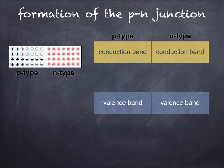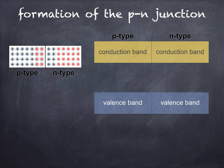Where the P-type and N-type regions meet is known as a P-N junction. Here, electrons from the N-type material move across the junction and combine with holes from the P-type, and vice versa. This is a process known as diffusion, which creates a region within the semiconductor known as the depletion layer.